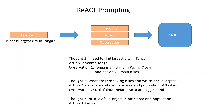In this example, you can see that first we asked it a question, and then it started reasoning through it. The first thought was: I need to find the largest city in Tonga. Then the action was to search Tonga. This is all being done by the foundation model, and we are guiding it on how to do this. On the basis of this action, the search observation made by the foundation model was that Tonga is an island with three main cities.